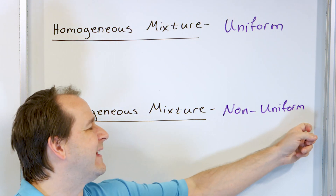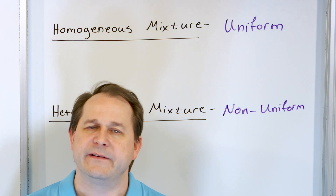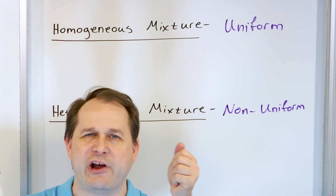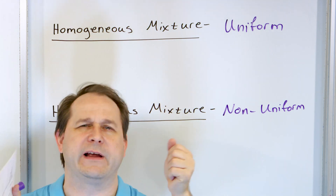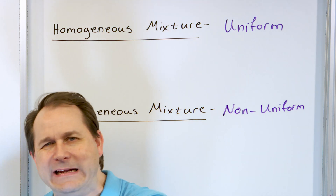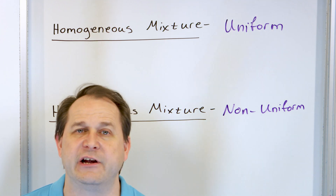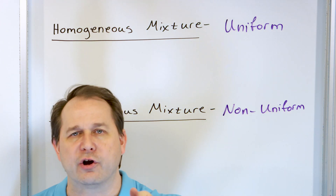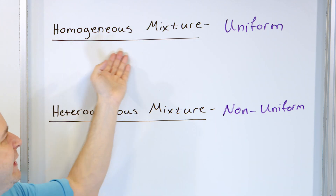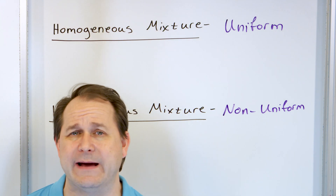A heterogeneous mixture is any mixture that's non-uniform. You can contrast that with the situation where you take dirt, take some sand, put it in a bucket, shake it, put it in a machine that shakes it for two hours. Then if you sample any little part of that container, you're going to find the same composition — and that is a homogeneous mixture, meaning uniform, or all the same throughout.